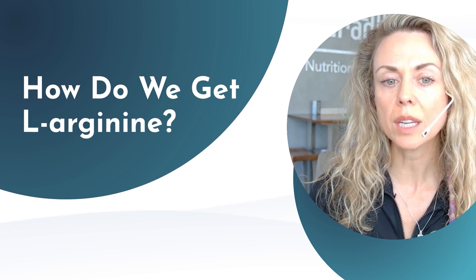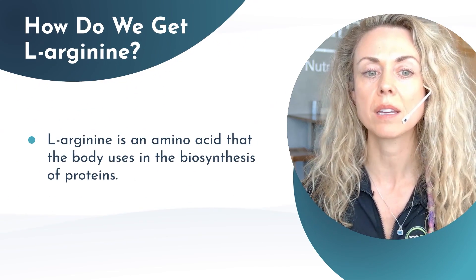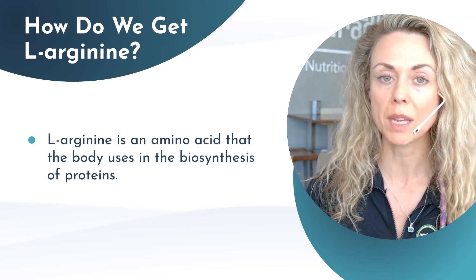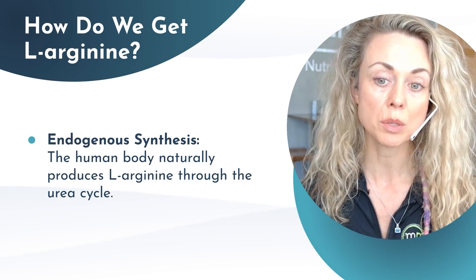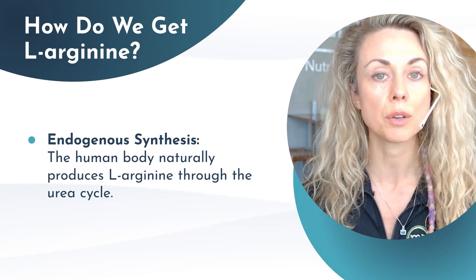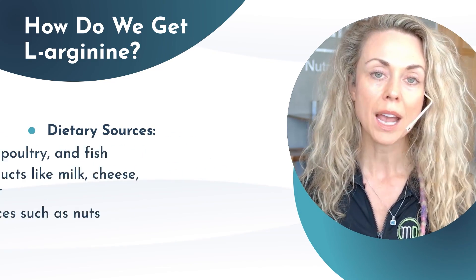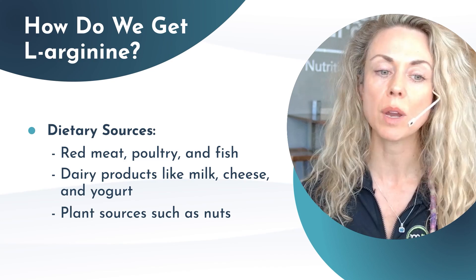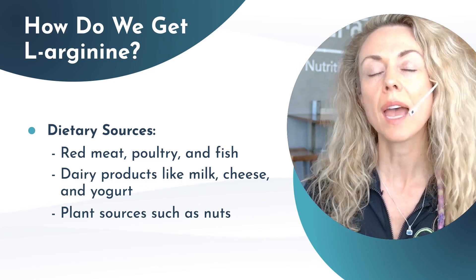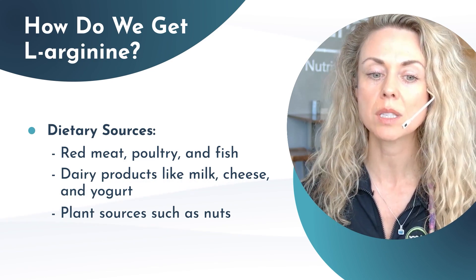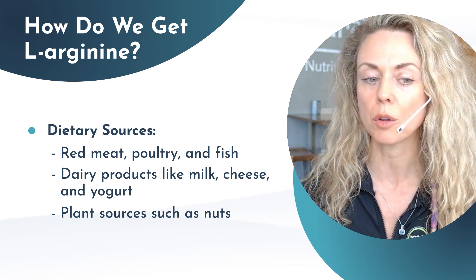How do we get L-arginine? It's an amino acid we can obtain through endogenous synthesis — the human body naturally produces L-arginine through the urea cycle — and from dietary sources such as animal proteins including red meat, poultry, fish, eggs, dairy products, and some plant sources like nuts, seeds, soybeans, and legumes.